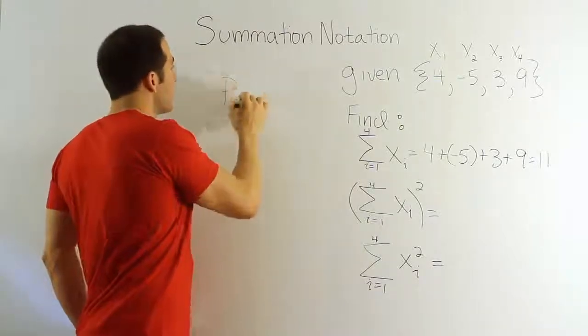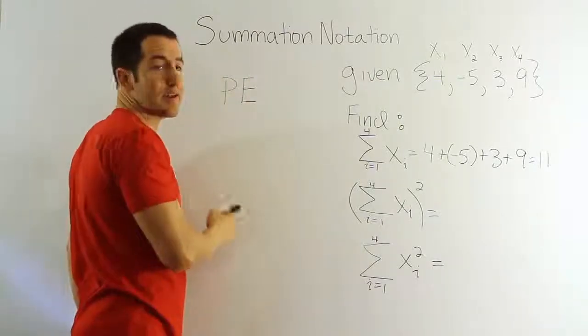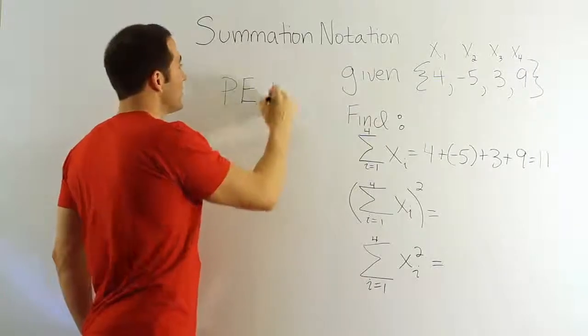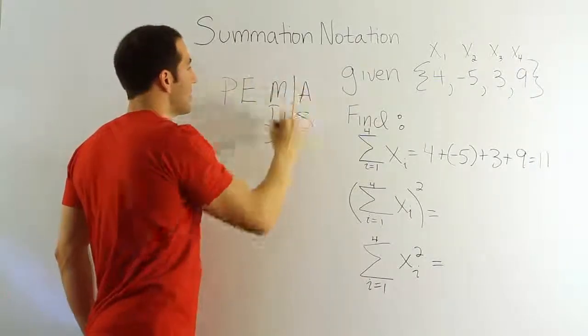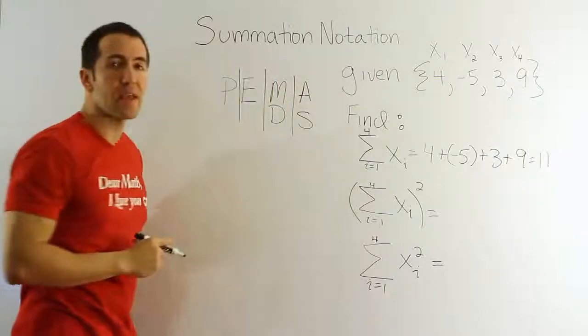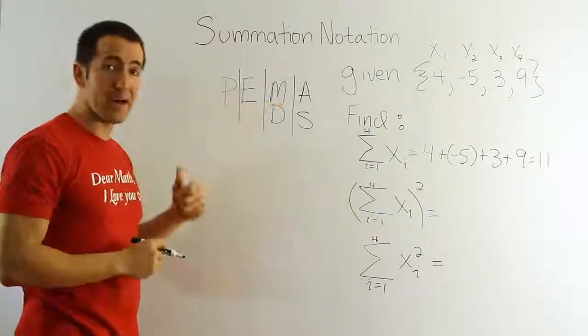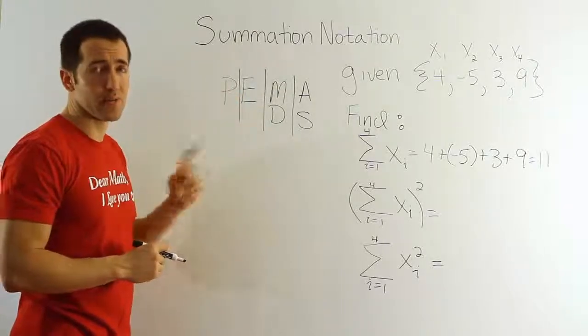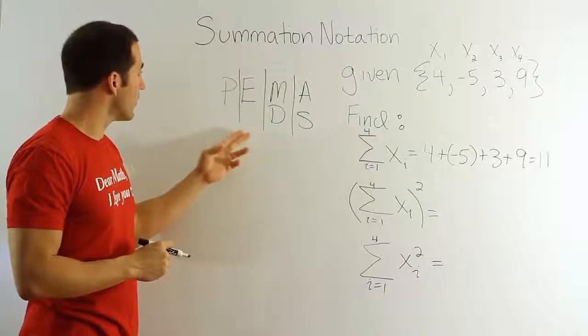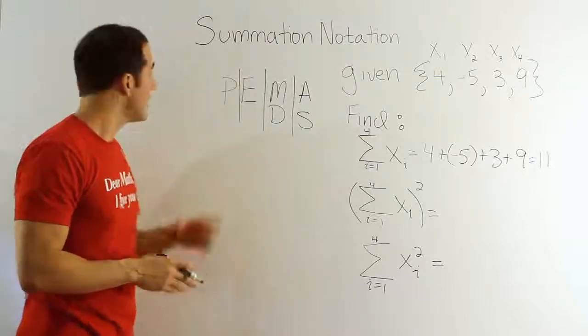You have please excuse my dear Aunt Sally. You've seen that written out that way before? Maybe you haven't seen it written this way. A lot of people write it all in one line. I don't agree with that because it implies that maybe multiplication comes before division. That's not true. There are four unique orders of operations here.